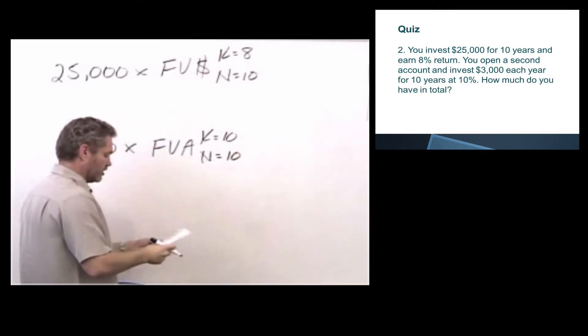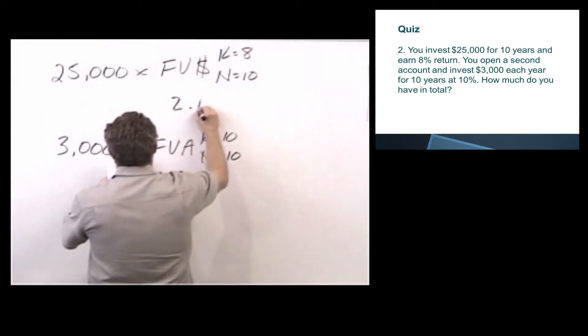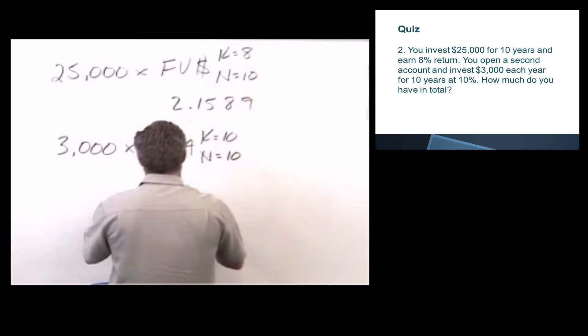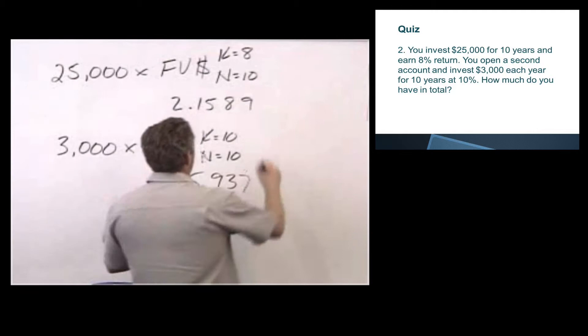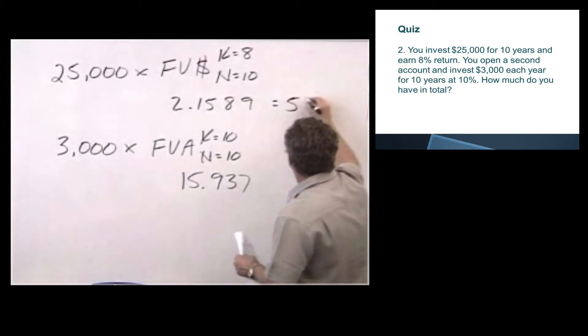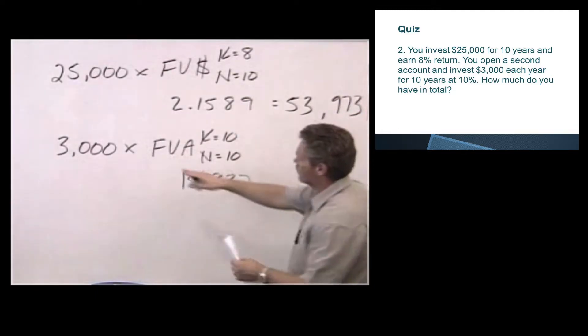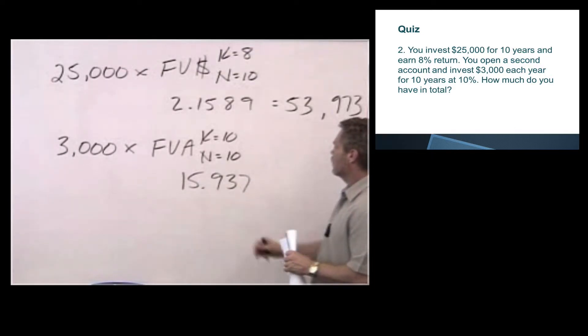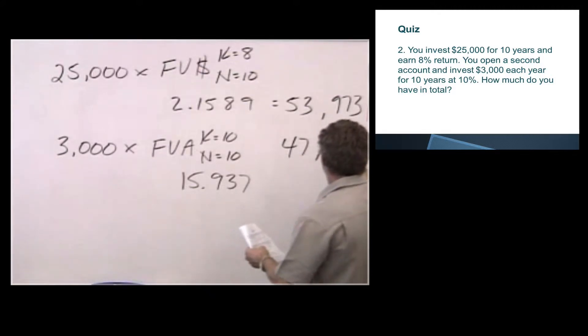We look up the factors for each of these. And so the first one is 2.1589, and the second one's factor is 15.937. 25,000 times 2.1589 equals 53,973, and $3,000 times 15.937 equals 47,811. We add those up, we get 101,784.